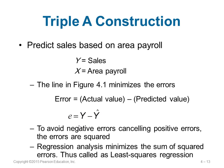We do not know the exact value, so we are going to predict. If you make a prediction, there will be some error. Error equals the actual value minus the predicted value — you can have positive or negative error. In Triple A Construction, y is sales and x is area payroll. To make sure positive and negative errors do not cancel each other when summed, we square the errors. Regression analysis minimizes the sum of squared errors — this is called least squares regression.